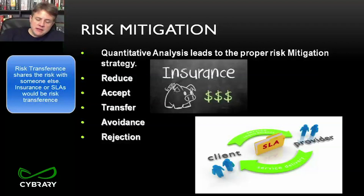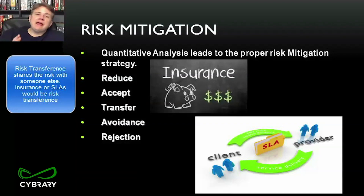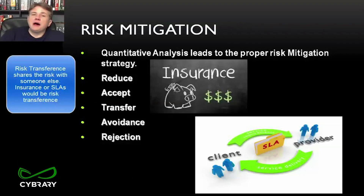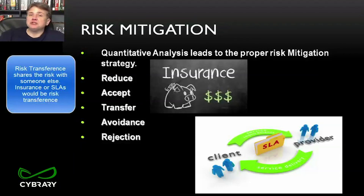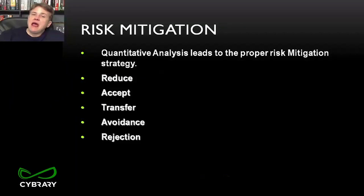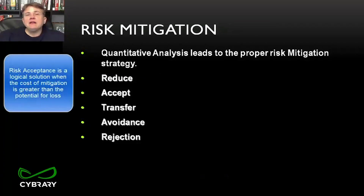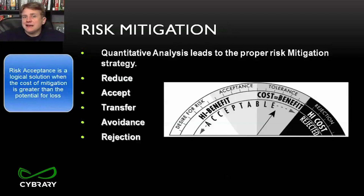So insurance, service level agreements, and contract modification are all forms of risk transference. For example, if a vendor has been late every time, we modify the contract so that for each day late, he returns 1% of the contract value to us. Ultimately, we might just accept the risk — we accept the risk when we determine that the potential for loss is less than the cost of the countermeasure.